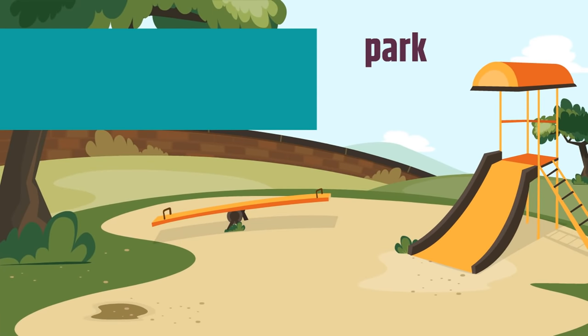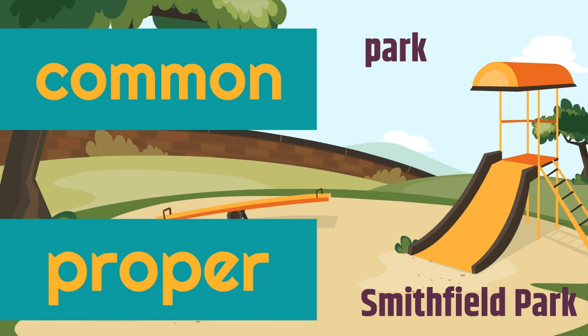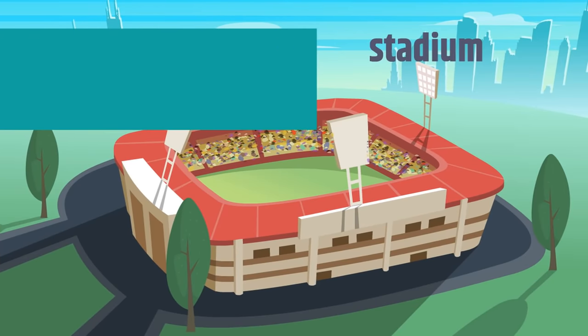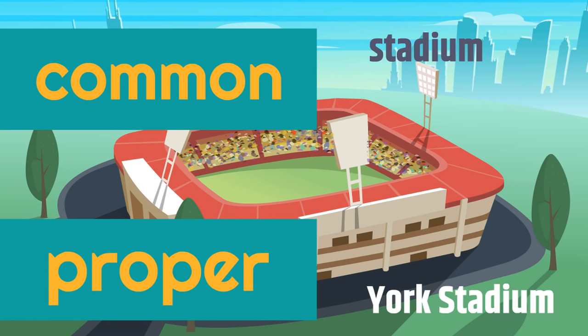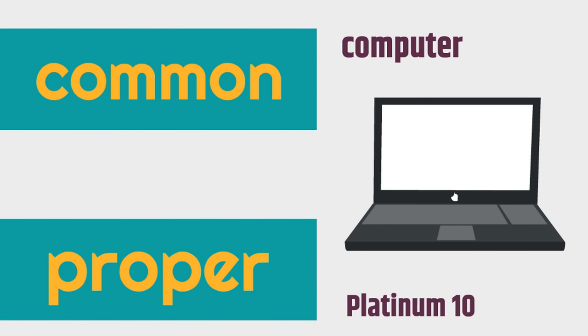Park is the common noun here and it starts with a lowercase letter. And Smithfield Park is the proper noun, so because it's a proper noun, it starts with capital letters. The common noun here is stadium, and the proper noun is York Stadium, and the proper noun starts with capital letters — York Stadium is capitalized because it's a proper noun. The common noun is computer, so it has a lowercase letter. But the proper noun is Platinum 10, which is capitalized because it's the proper noun.